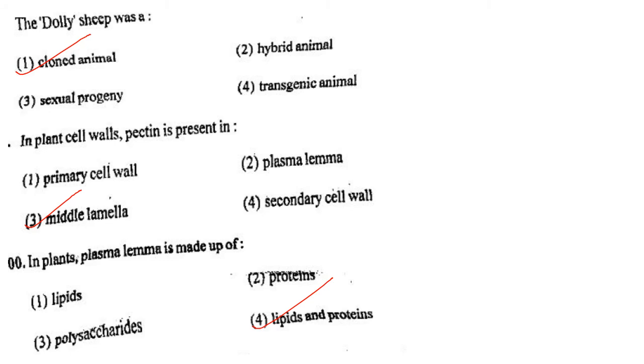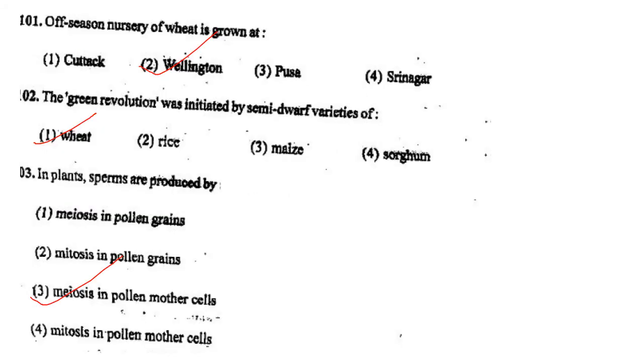Next one: In plants, the plasmalemma is made of option 1, lipids; option 2, proteins; option 3, polysaccharides; option 4, lipids and proteins. Answer is option 4: lipids and proteins.